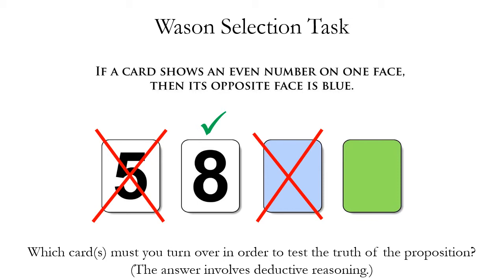Now let's look at the green card on the far right. Do we have to flip that card over to test the truth of this proposition? The answer is yes, which might also surprise you. The proposition does not mention green in any of its clauses. However, if we flip this card over and it has an even number, that falsifies the proposition — because if it's an even numbered card, it's supposed to have a blue face on the other side. This task may seem simple, but it's surprisingly difficult. Even some logic professors get questions wrong when tested this way.